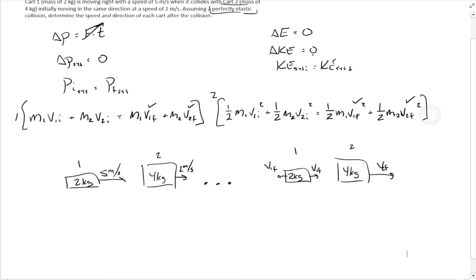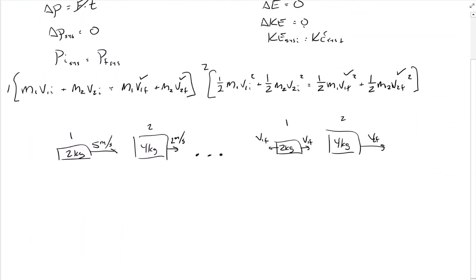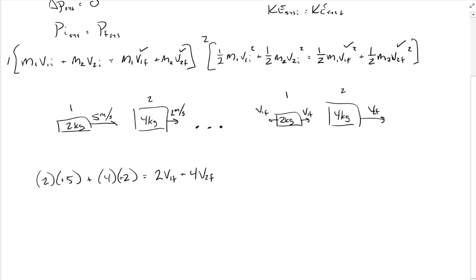Let's start plugging in numbers. For the momentum equation, cart one has a mass of two kilograms moving at positive five, plus cart two has a mass of four kilograms moving at positive two. On the right side, we have a mass of two times V1 final plus four times V2 final. Cleaning up the left side: five times two is ten, plus eight equals eighteen. So eighteen equals two V1 final plus four V2 final. That's equation one.